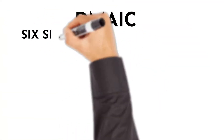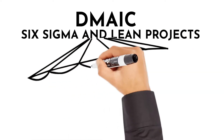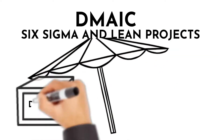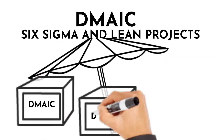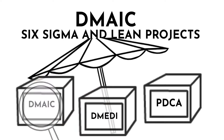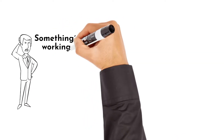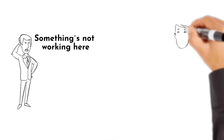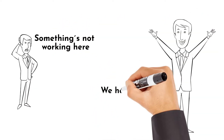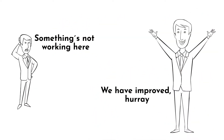DMAIC is a core method to drive Six Sigma projects. Take Six Sigma as an umbrella covering different toolboxes that allow us to react on different opportunity types. DMAIC is a method that helps to improve current existing processes that we are not satisfied with in terms of their performance.